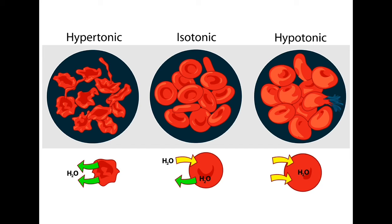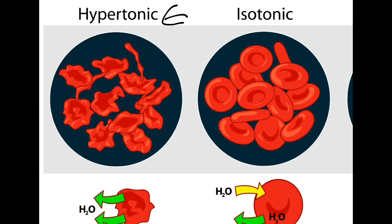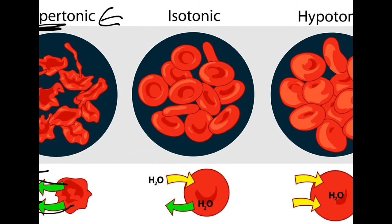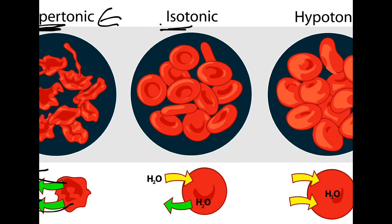Let's apply these principles using the human red blood cell as an example of how osmosis works in relation to solute concentration. In a hypertonic solution — where there are more solutes outside the cell than inside, like placing a cell in a very salty solution — water follows the solutes and rushes out of the cell, causing it to shrink. 'Hyper' means above, so a hypertonic solution means more solutes outside.